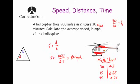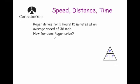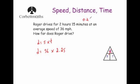Roger drives for 2 hours 15 minutes at an average speed of 36 miles per hour — how far does Roger drive? Distance = speed × time. The time must be in hours: 15 minutes is a quarter of an hour = 0.25, so 2 hours 15 minutes = 2.25 hours. Distance = 36 × 2.25 = 81 miles.